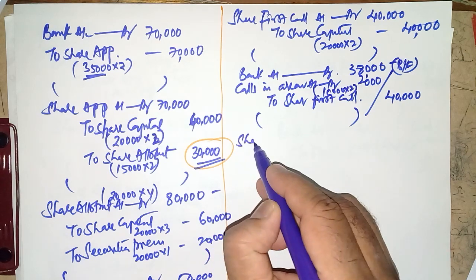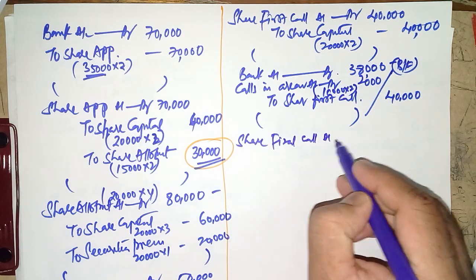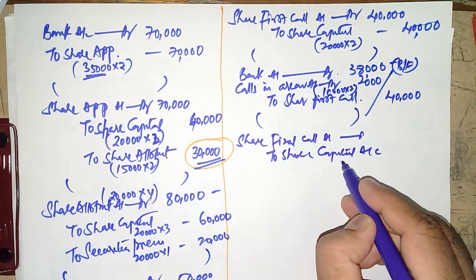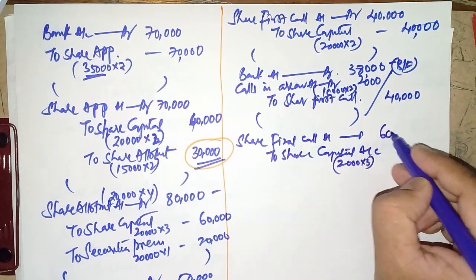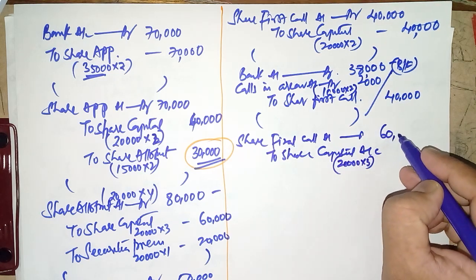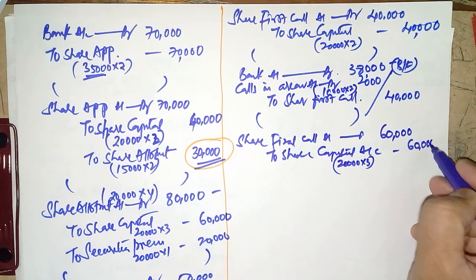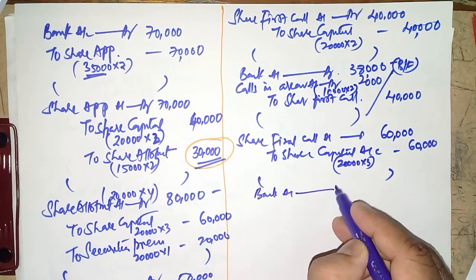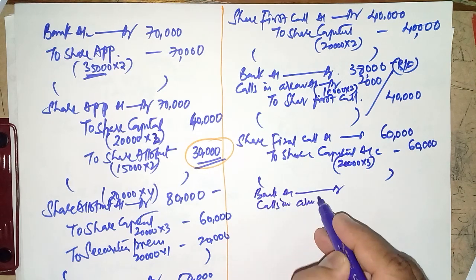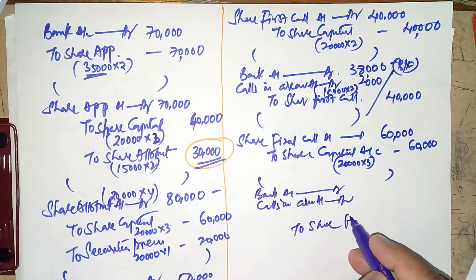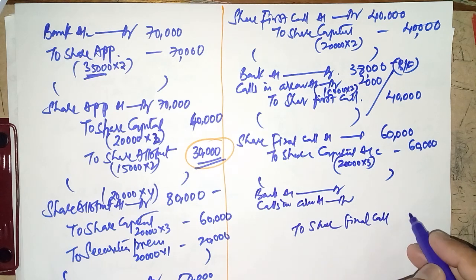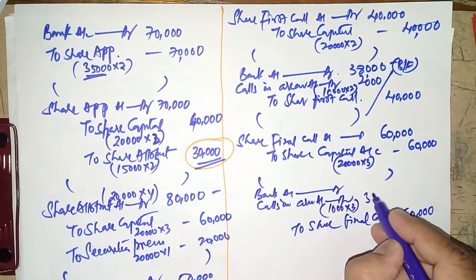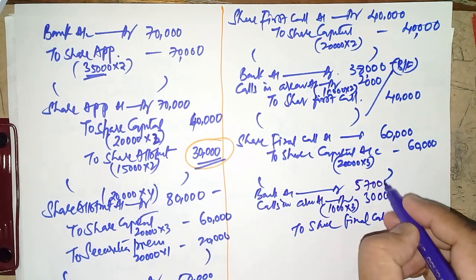Share final call due entry: Share Final Call Account Dr. to Share Capital — 20,000 × ₹3 = ₹60,000. On receipt: Bank Account Dr. and Calls in Arrears Account Dr. ₹3000 (1000 shares × ₹3) to Share Final Call ₹60,000. We receive ₹57,000 — the balancing figure.